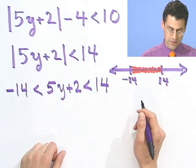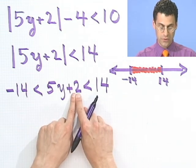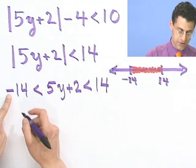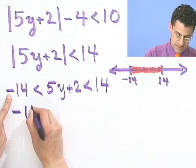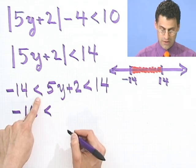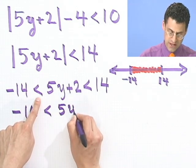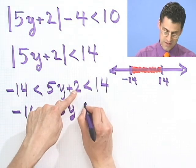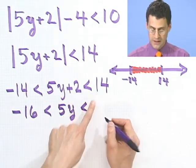And now I've got to solve this inequality. And what do I do? Well, I'm going to subtract 2 everywhere. If I subtract 2 from here, I have minus 16, same inequality. 5y, if I subtract 2 from here, that's gone, same inequality. If I subtract 2 from here, I have 12.